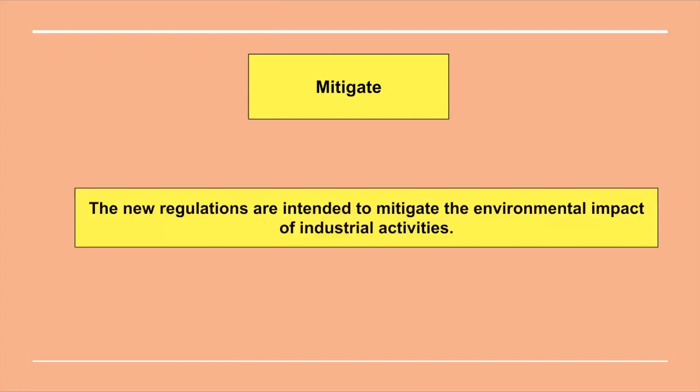The next word is mitigate. The meaning for mitigate is to make less severe, serious or painful. For example: the new regulations are intended to mitigate the environmental impact of industrial activities. This sentence tells us that the new regulations are going to lower the environmental impact — make it less severe or make the impact less painful to the environment. Hence, mitigate means to make less severe, serious or painful.